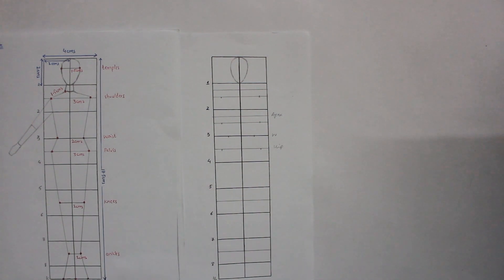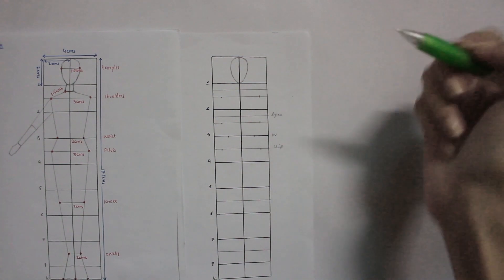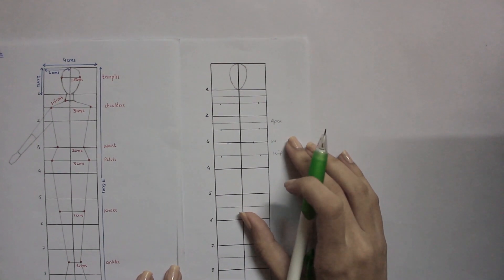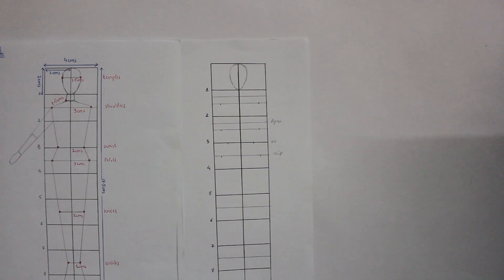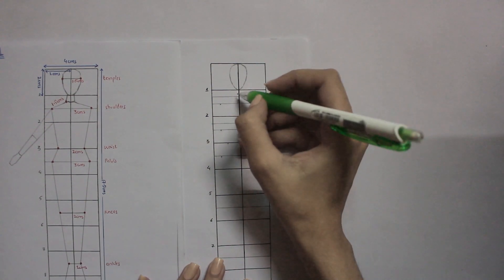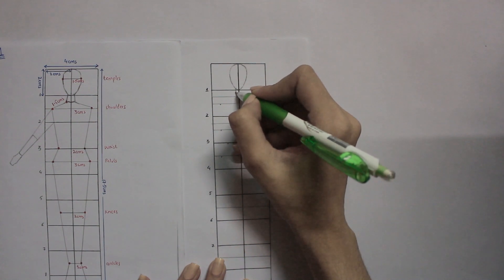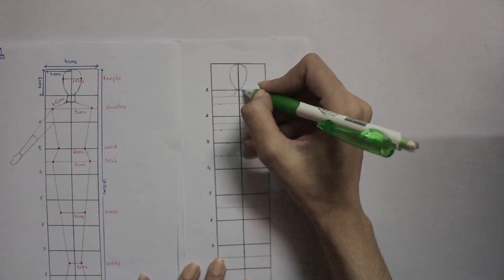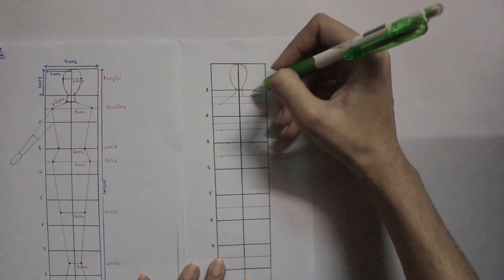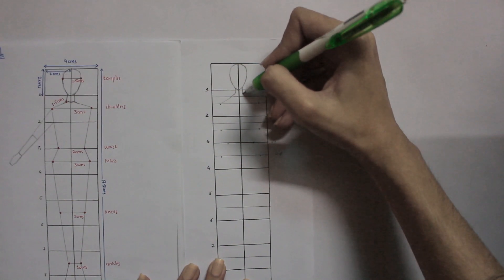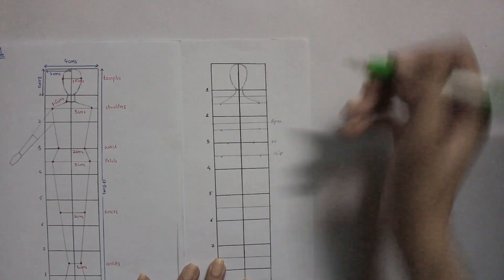First you have to make the head. You know which human figure has a curvy body has curves. With straight lines we have to make the curves.